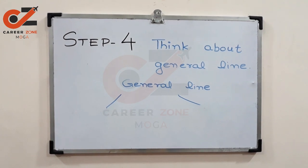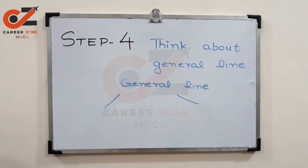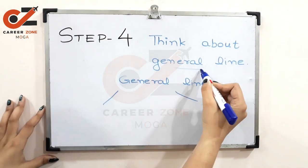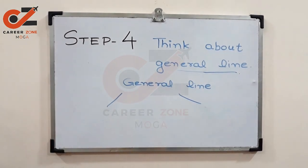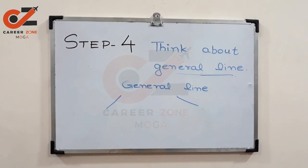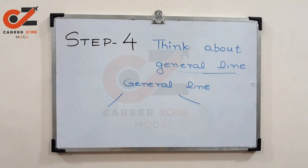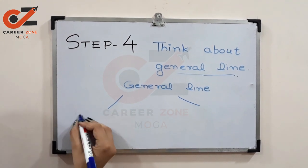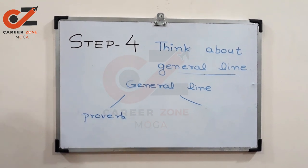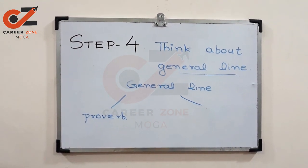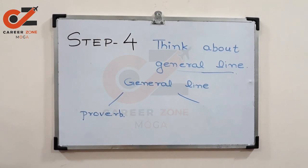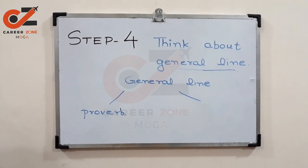At that time, think about a general line. Our step four is to think about a general line. There are one or two ways to prepare it. Either you can use a proverb — for instance, if your cue card is related to advice, you can mention 'advice is cheap and should be given to everyone,' or 'never give advice unasked — this is what I believe.'